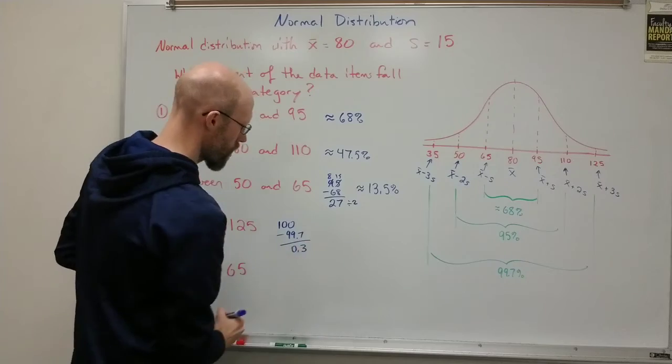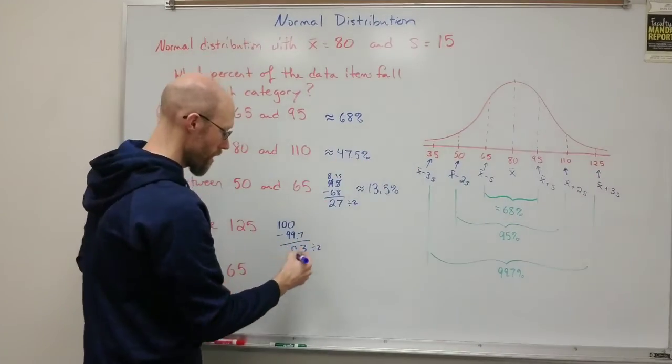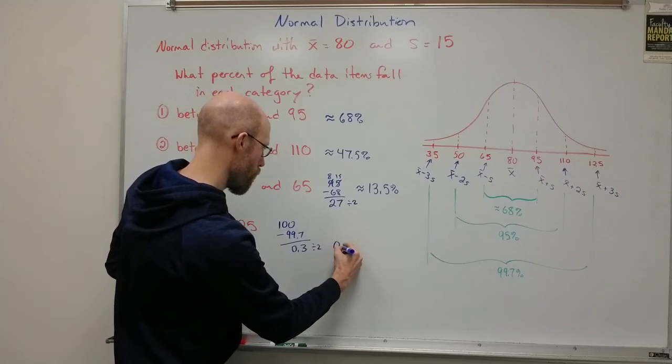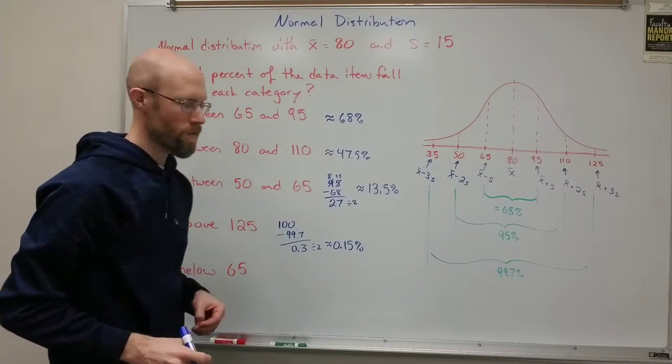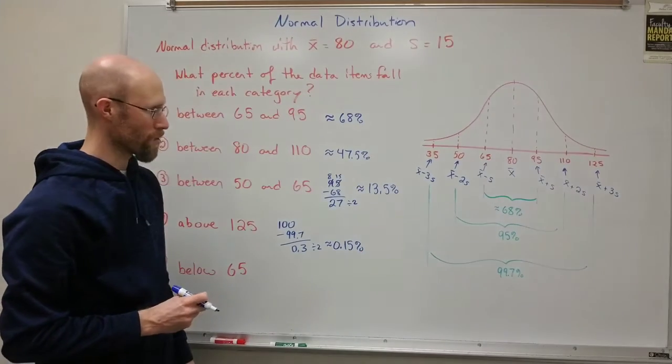So it's basically the 100% minus 99.7, which is 0.3. And then I divide that in half to get the right side. And that should be approximately 0.15%, 15 hundredths of a percent, very small amount out on the right.